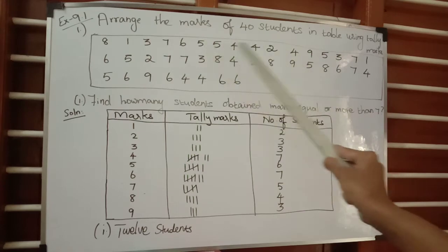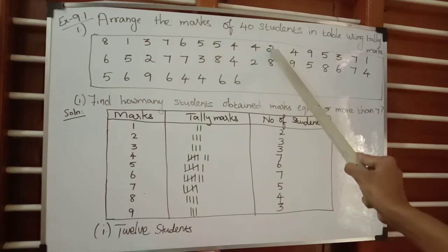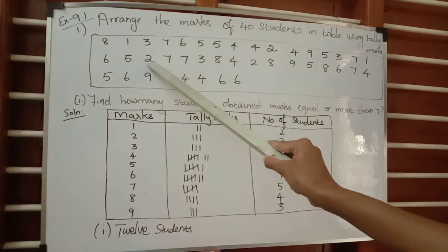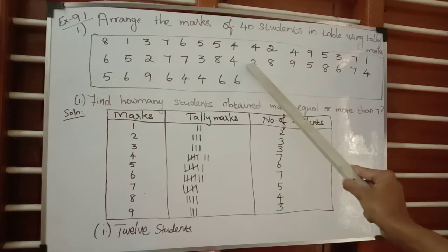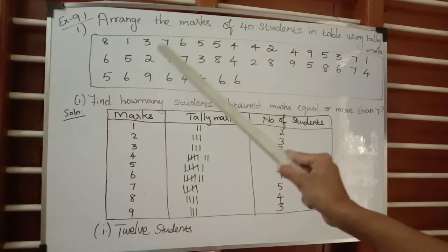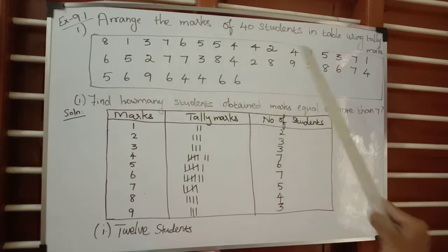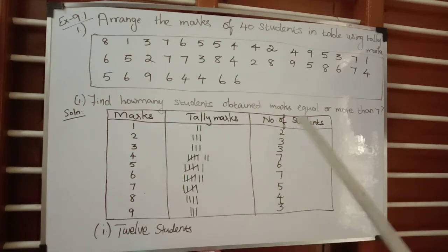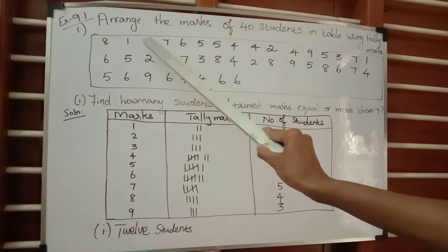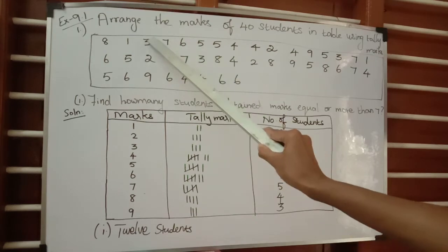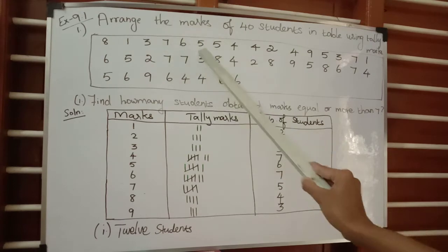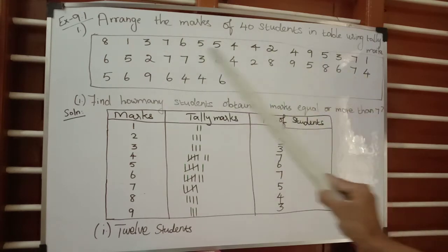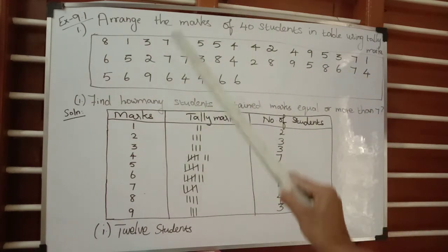Next, count the number of times digit two appears: it has been repeated three times. So you have to draw three vertical lines for the tally marks. The number of students for mark two is three.